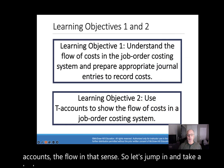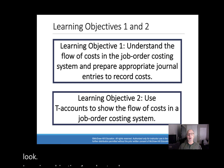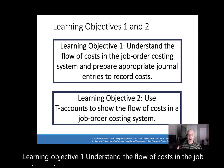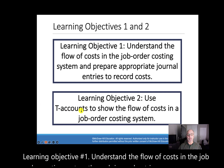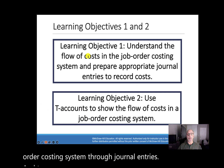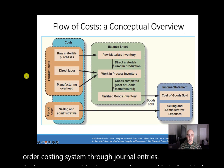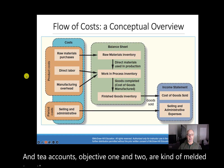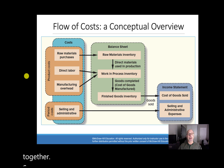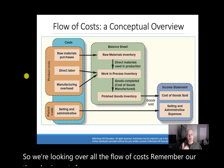Learning Objective number 1: understand the flow of costs in the job order costing system through journal entries and T-accounts. Objectives 1 and 2 are kind of melded together. We're looking overall at flow of costs. Remember our three basic costs for manufacturing: raw materials, direct labor, and manufacturing overhead.